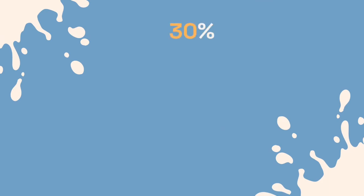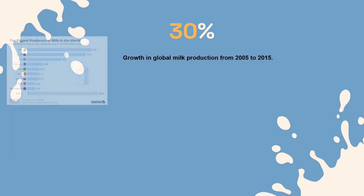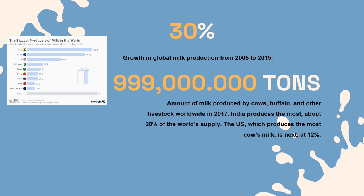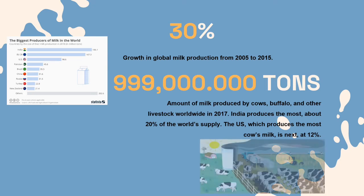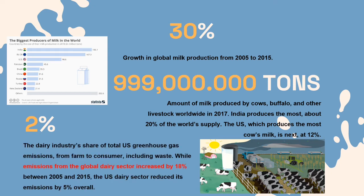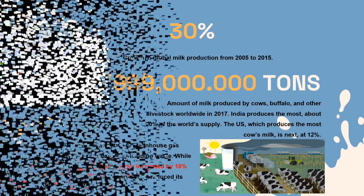There was about a 30% growth in global milk production from 2005 to 2015. A total of 909 million tons of milk was produced by cows, buffalo, and other livestock worldwide in 2017. India produces the most, about 20% of the world's supply. The United States is next at 12%, accounting for about 2% of the dairy industry's share of total US greenhouse gas emissions from farm to consumer, including waste. While emissions from the global dairy sector increased by 18% between 2005 and 2015, the US dairy sector reduced its emissions by 5% overall.